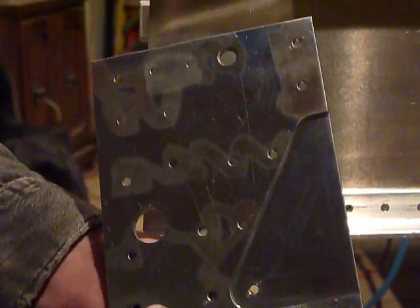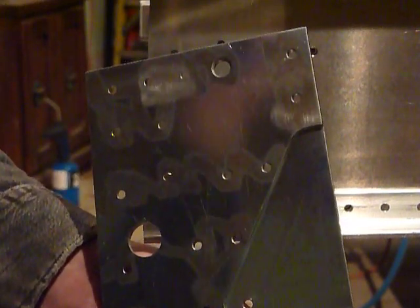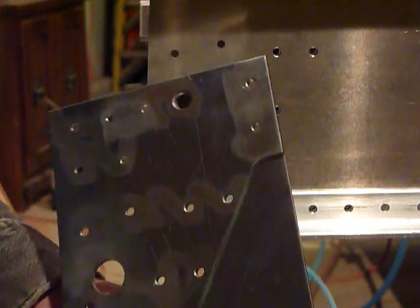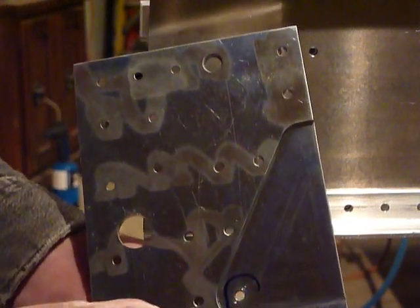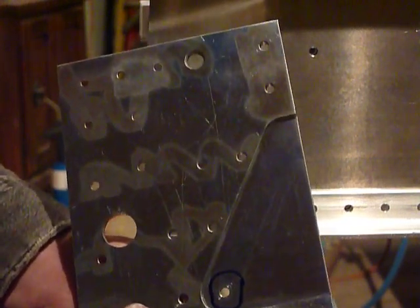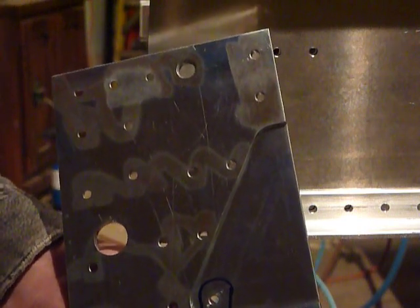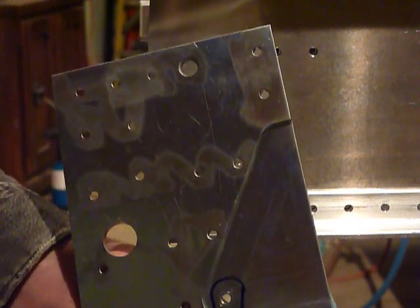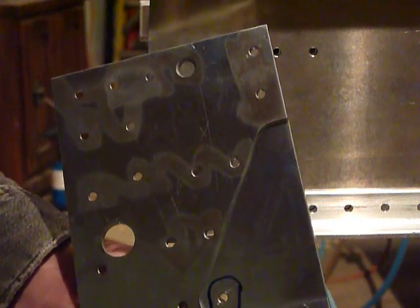We're looking at the main spar right here. When we started stacking things up, we noticed that there was a void right here in this area that you couldn't really tighten the bolt. So I guess they recommended just leaving the bolt loose.